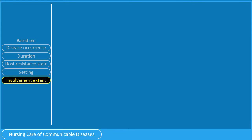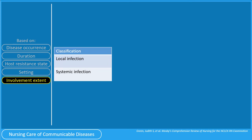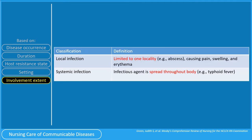Lastly, infectious diseases may be classified according to their extent of involvement. There may be a local infection or a systemic infection. A local infection is limited to one locality, causing pain, swelling, and erythema, while systemic infections occur when the infectious agent is spread throughout the body, as in typhoid fever. Take note that a local infection may have systemic repercussions such as fever, malaise, and lymphadenopathy.